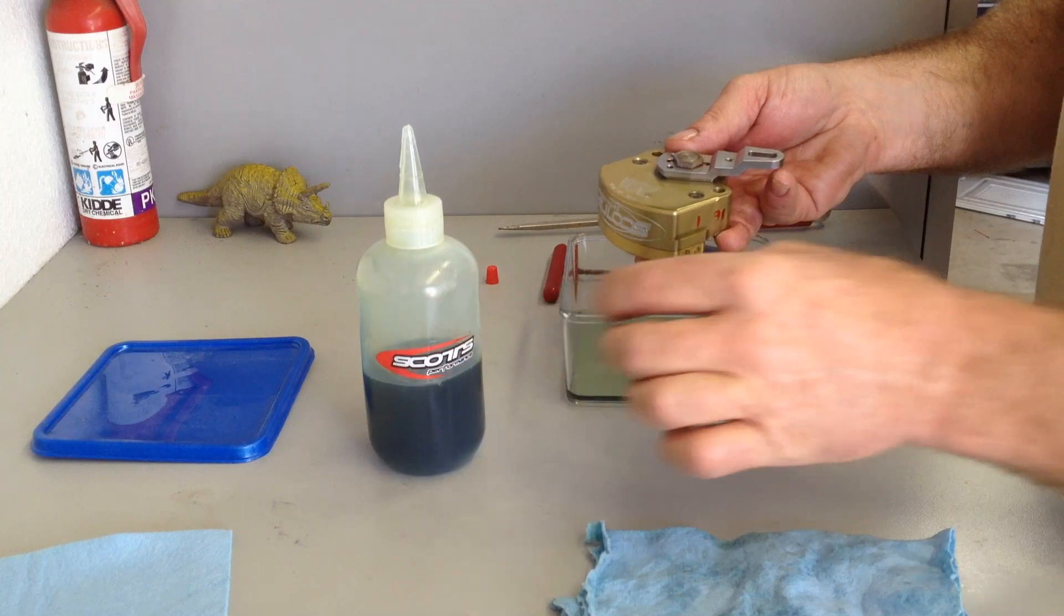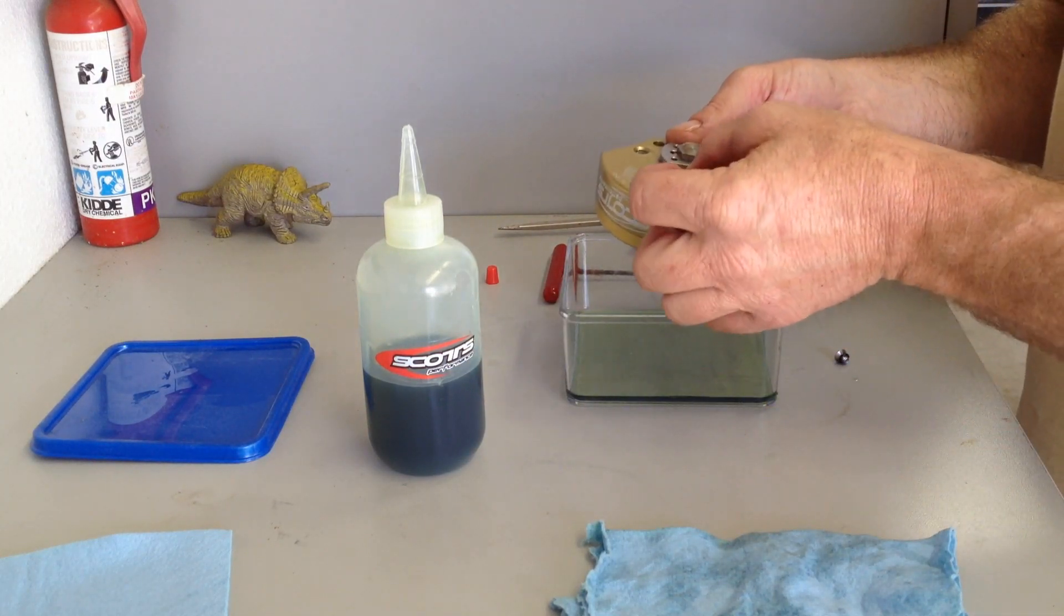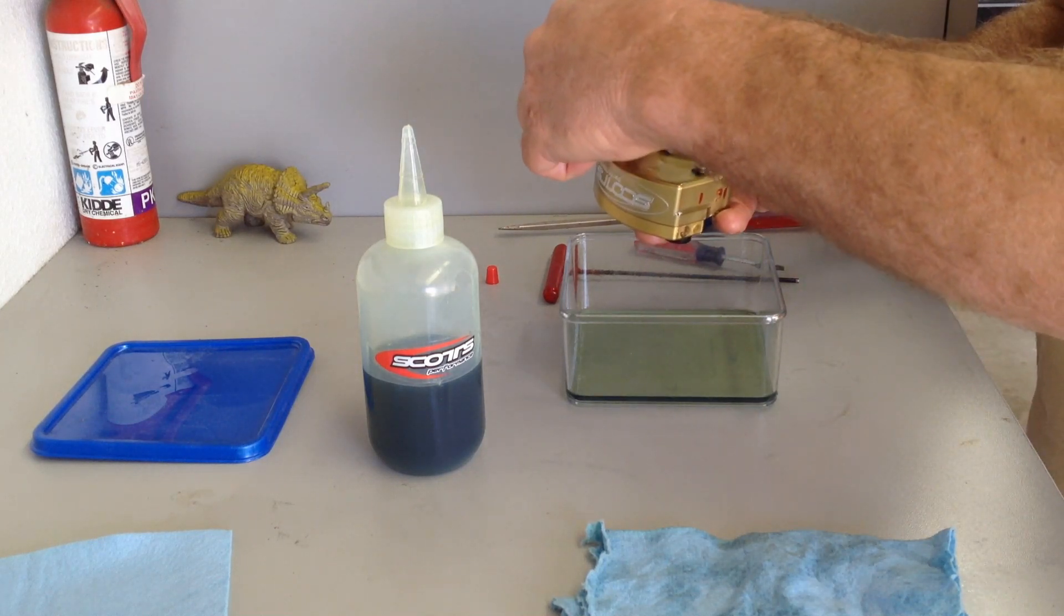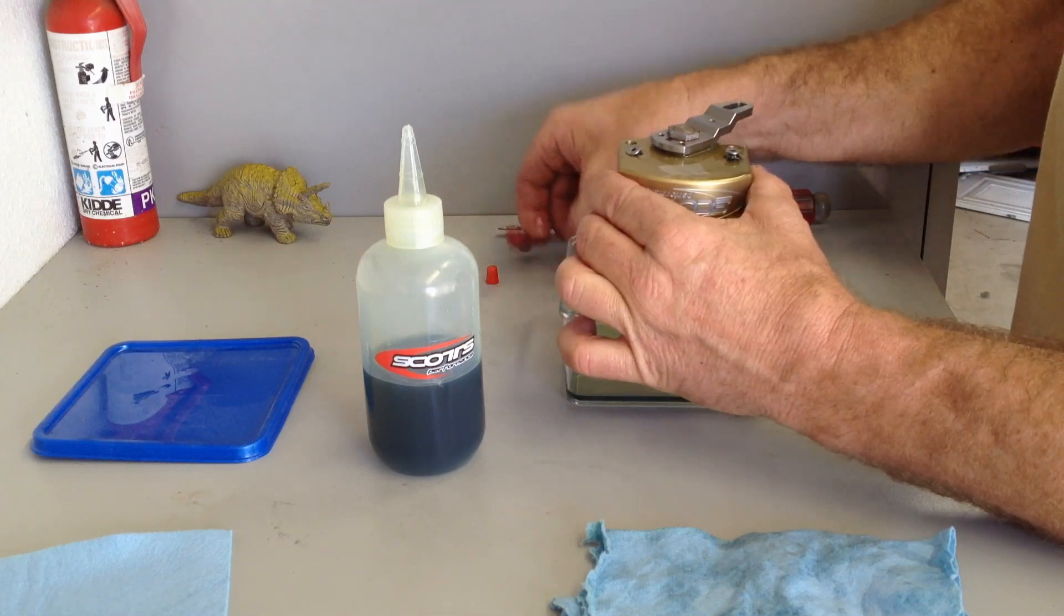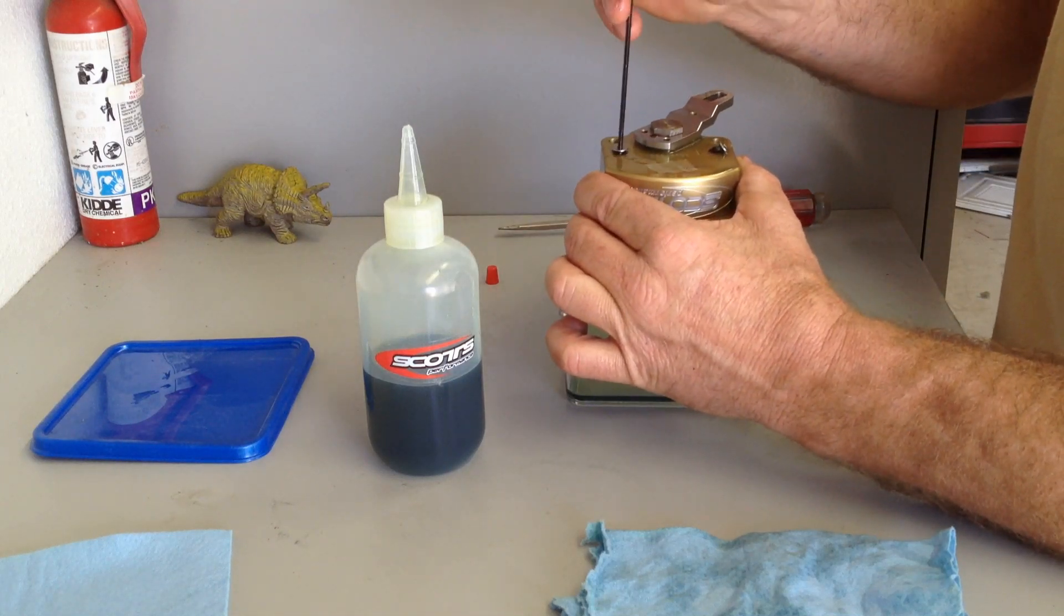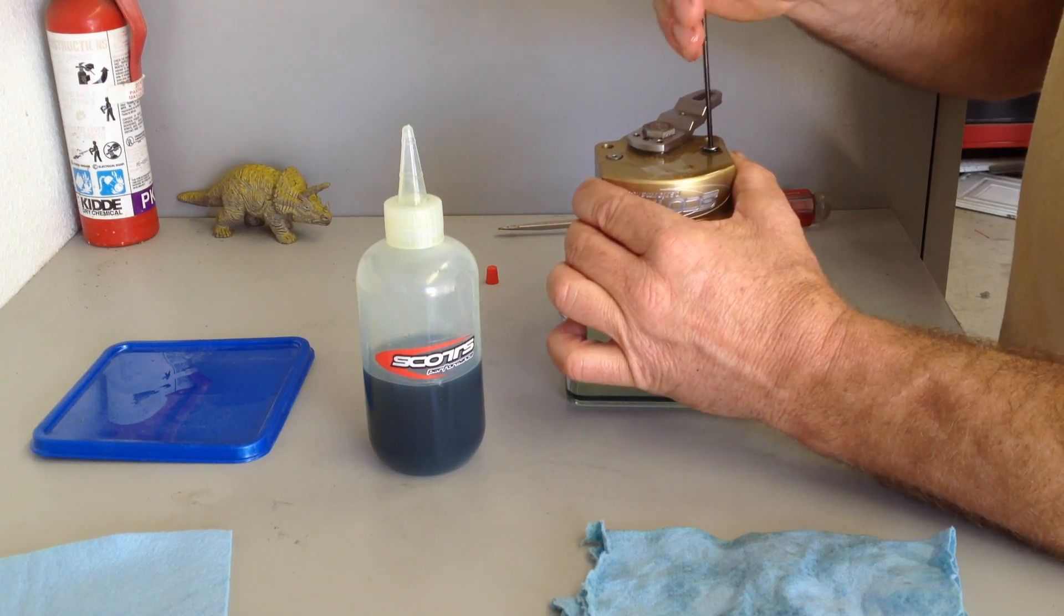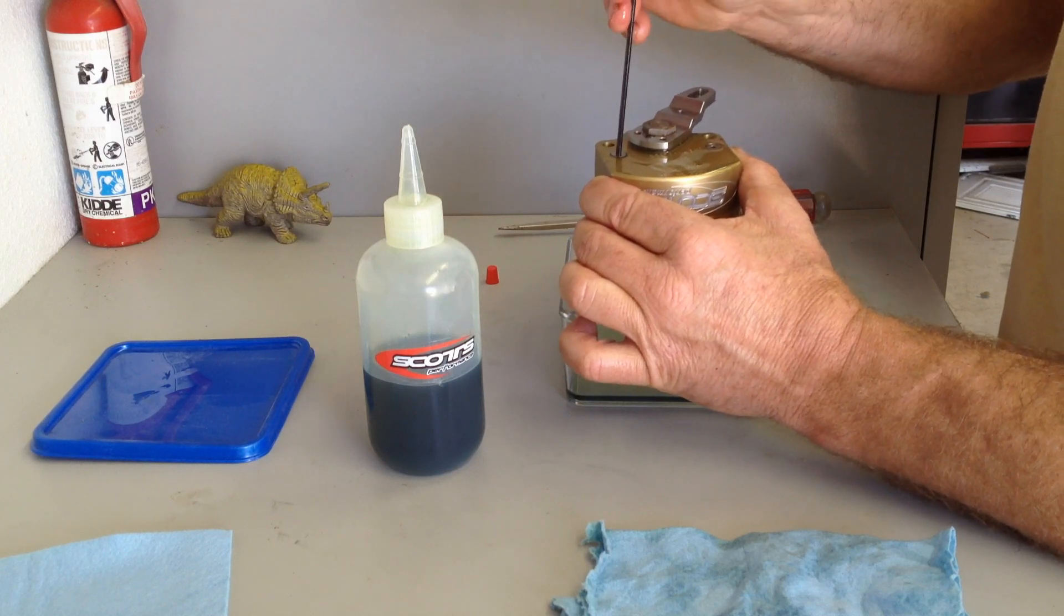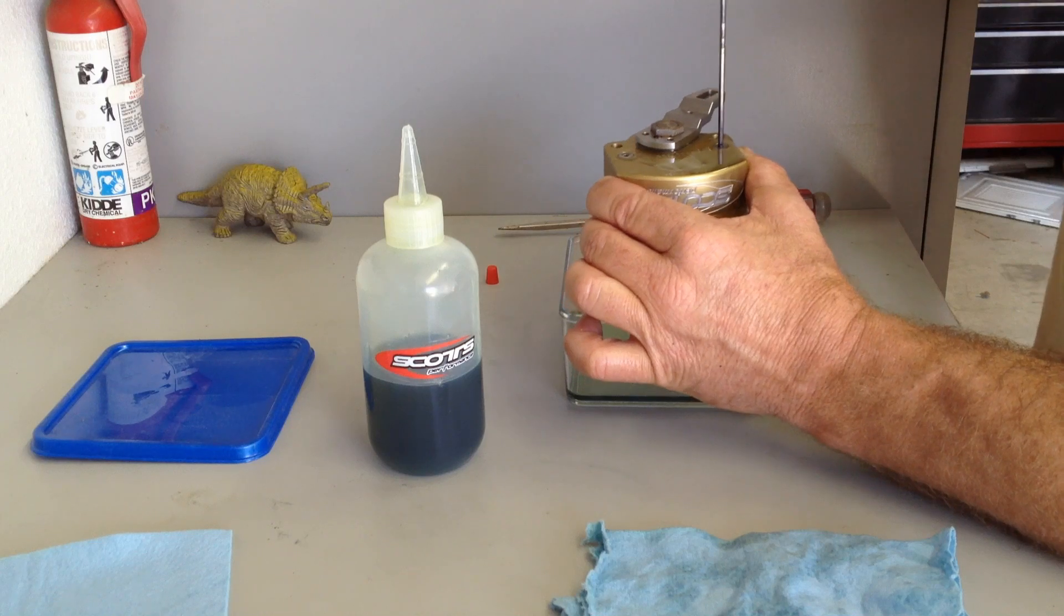So the damper is, for the most part, full. Now what I'm going to do is put the set screws back in and then snug them back down. I usually do this with the damper set in the lightest position because it makes it easier to swing the vein back and forth. So I've got them set in there.